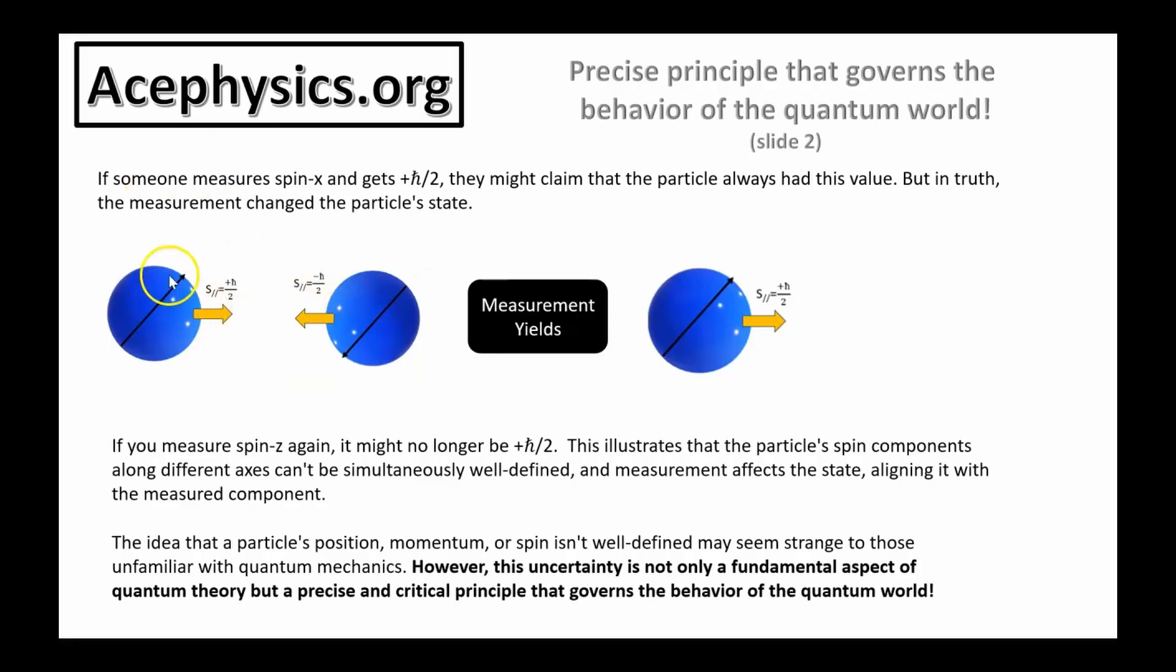If the state is in spin up, it's equal to half spin left and half spin right. If someone measures spin x and they get plus h bar over two, they might claim the particle always had that value. But the truth is, the measurement changed the particle's state. If you were initially in a linear combination of spin left and spin right, when you made the measurement, if you got a state spin plus h bar over two, the measurement changed the spin state. The particle can exist in multiple spin states at once. And yes, measuring it messes with those states. That's just how quantum mechanics rolls. So buckle up and embrace the weirdness.